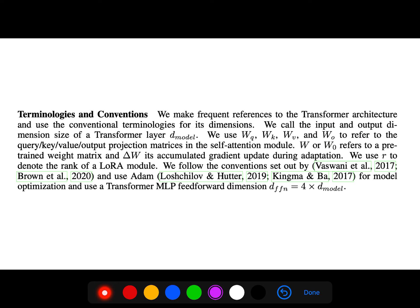So these are terminologies we call the input and output dimension size of transformer layer d_model. We use WQ, WK, WV, and WO to refer to the query, key, value, and output projection matrices in the self-attention module.